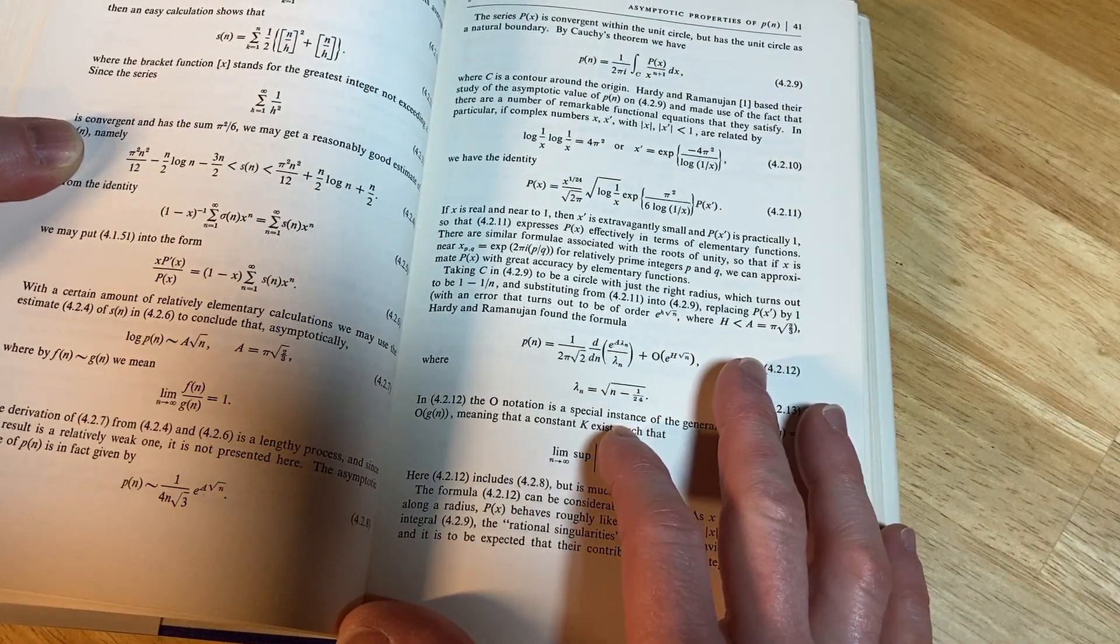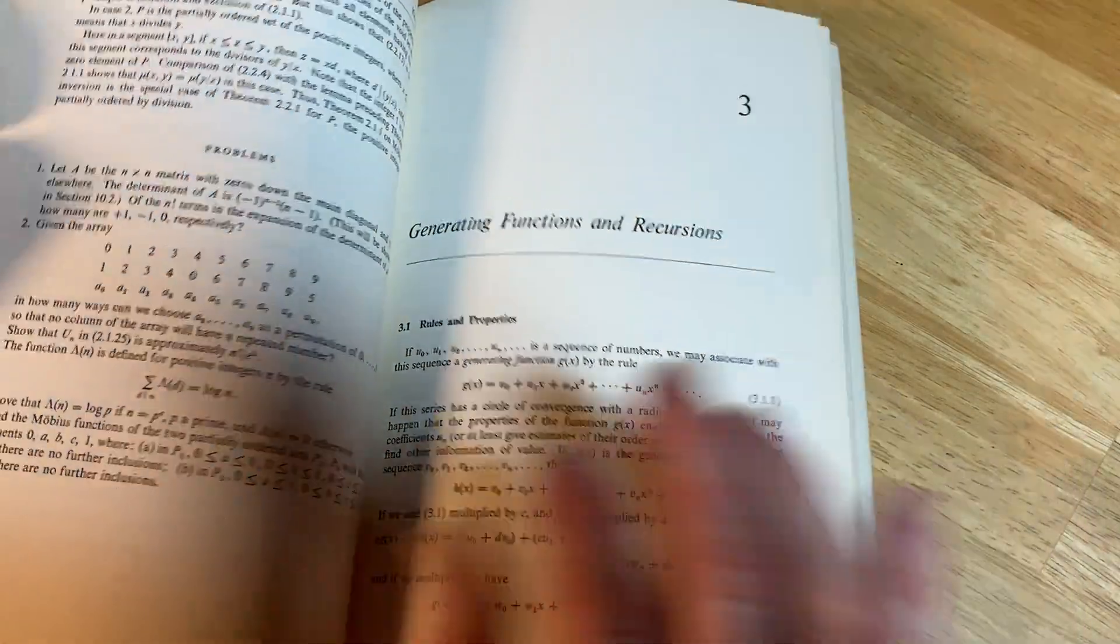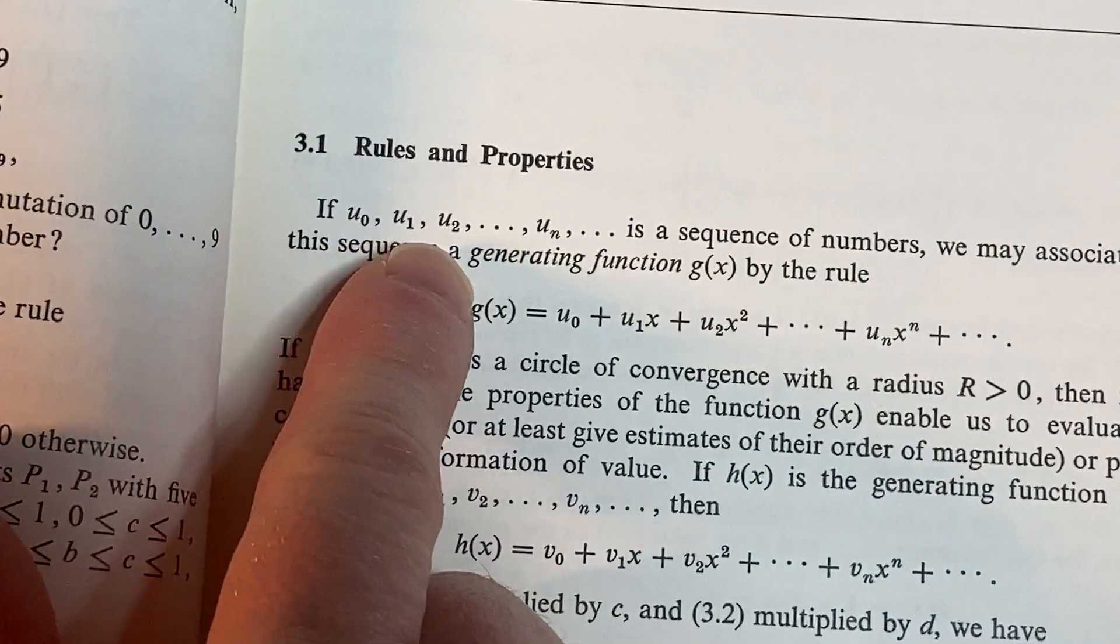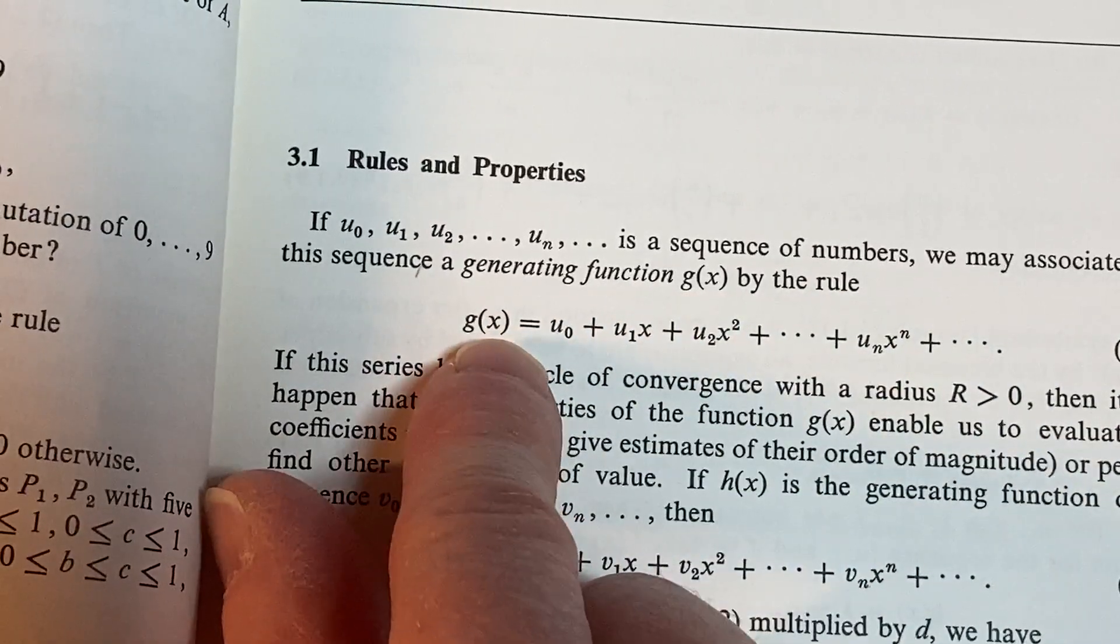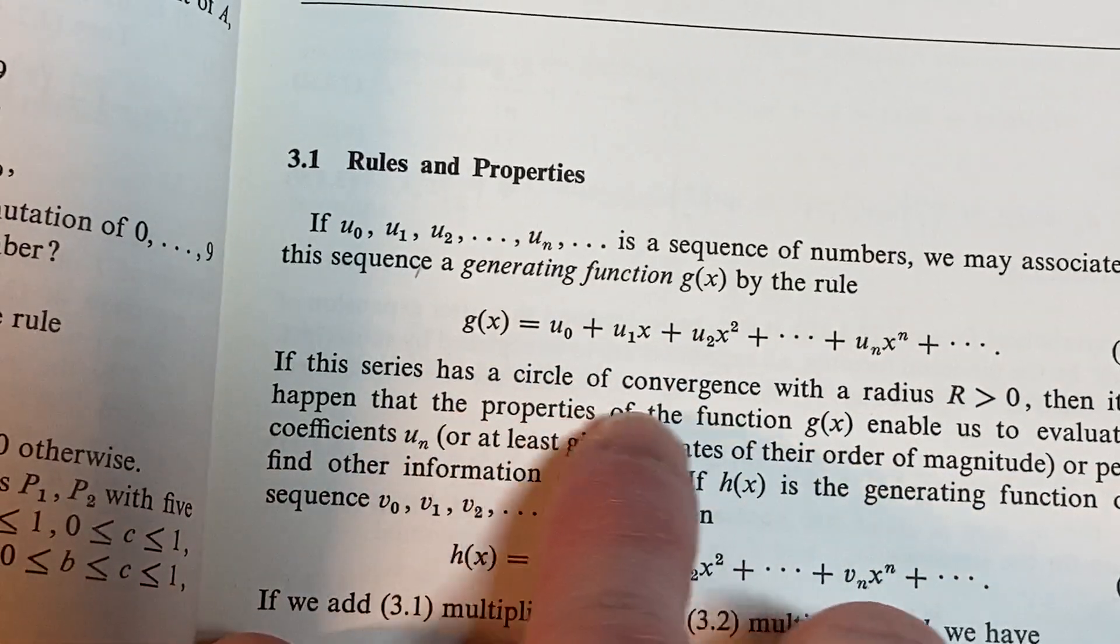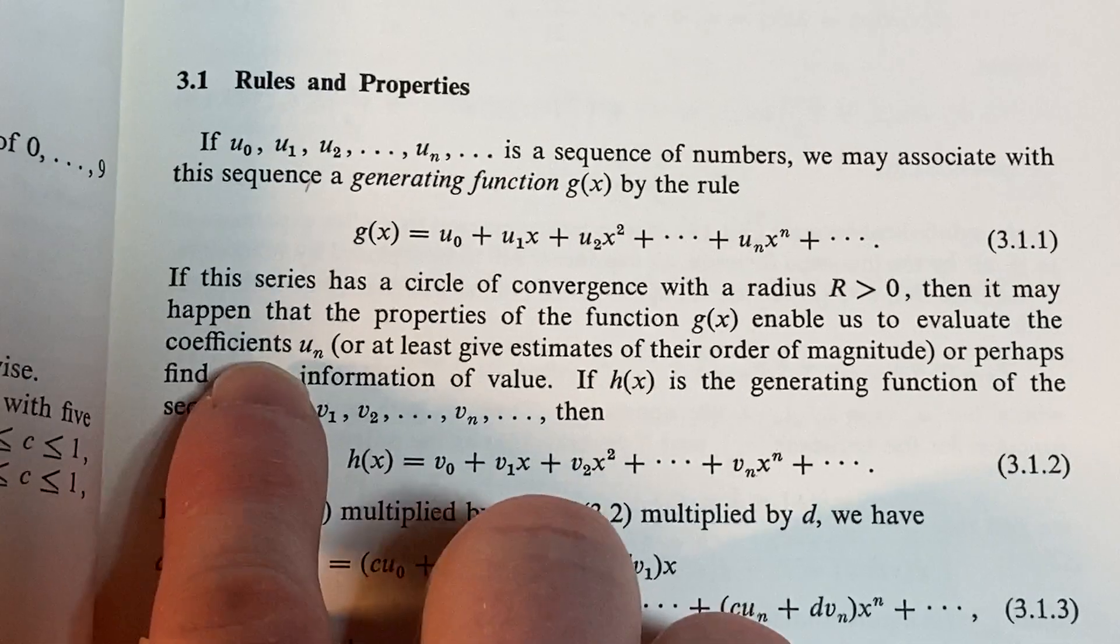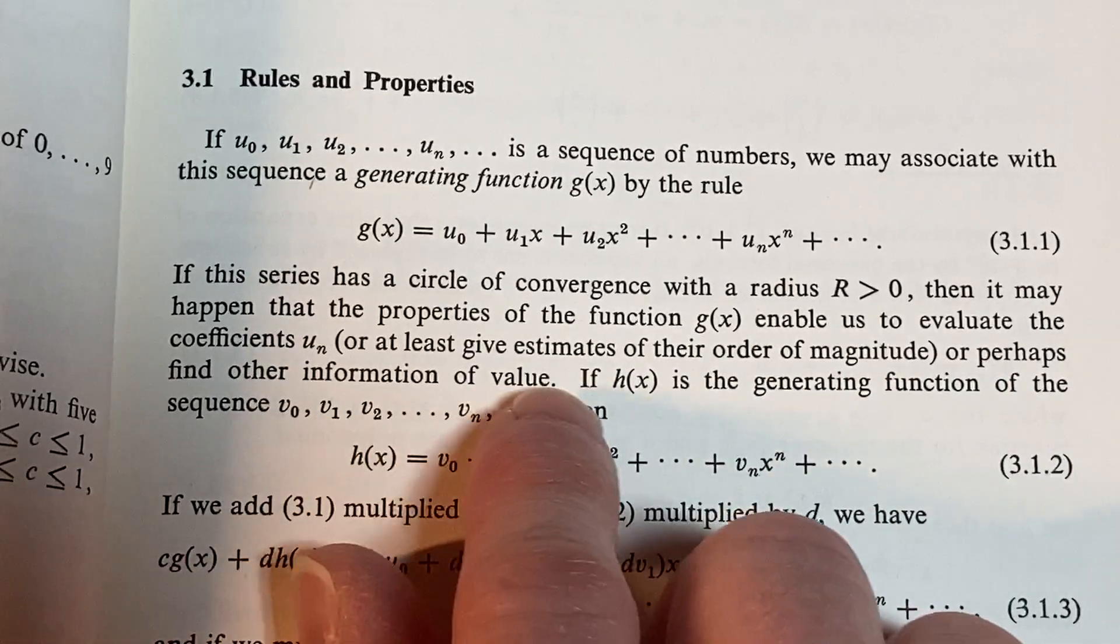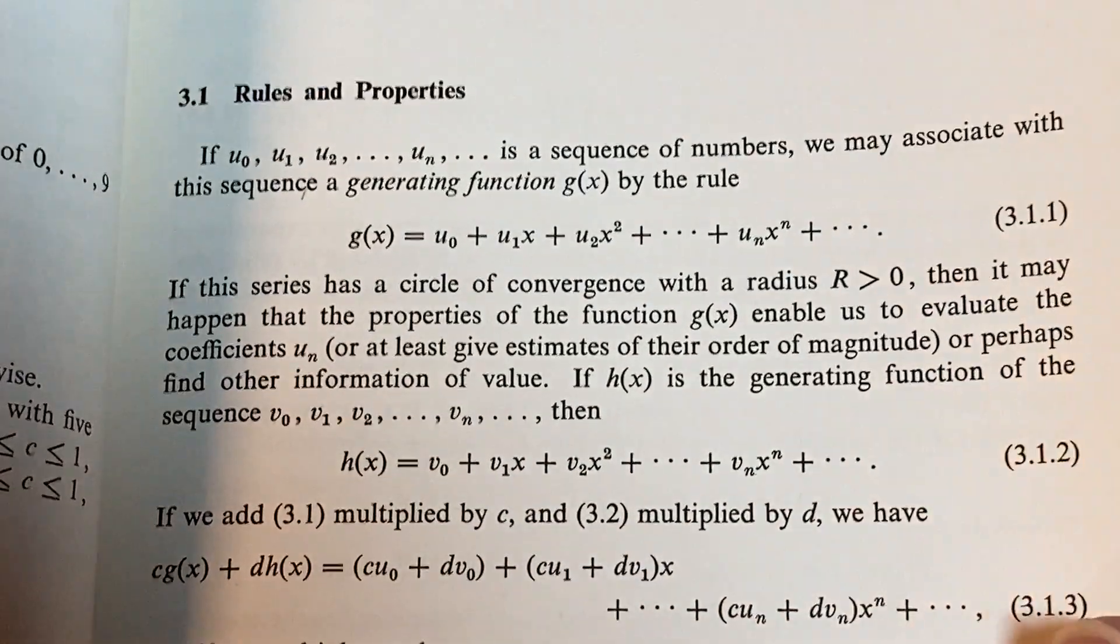It's got some calculus in here, as you can see as well. Looking at asymptotic properties and piece of n. Yeah. So it's an infinite series. I mean, or those are finite. Yeah. Generating functions and recursions. Let's look at this. Rules and properties. If u₀, u₁, u₂ through uₙ is a sequence of numbers, we may associate with this sequence a generating function g(x) by this rule here. If this series has a circle of convergence with radius R > 0, then it may happen that the properties of the function g(x) enable us to evaluate the coefficients uₙ, or at least give estimates of their order of magnitude, or perhaps find other information of value. If h(x) is the generating function of the sequence b₀ through bₙ, then we have this here. Pretty cool, right? Pretty cool. Combinatorial problems.